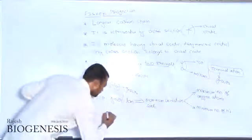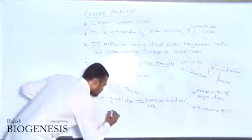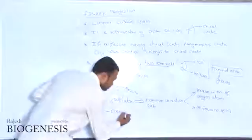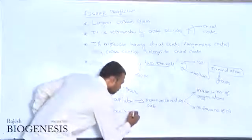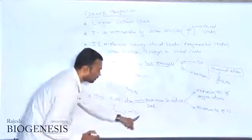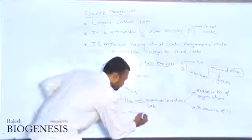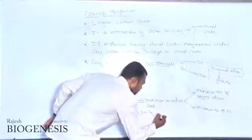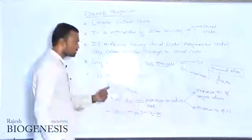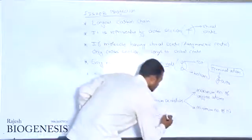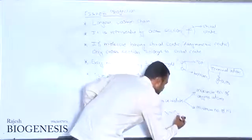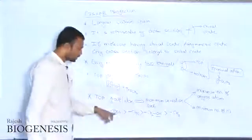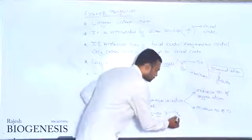We can follow the case of terminality here. If you consider carboxylic acid, it has two oxygens, so this is having the highest priority for top. Alcohol has only one oxygen with two adjacent hydrogens. Finally, there is the presence of hydrocarbons. This is the order of selectivity with respect to their top priority.